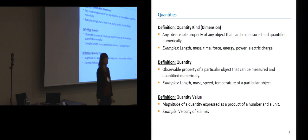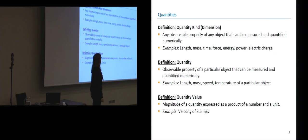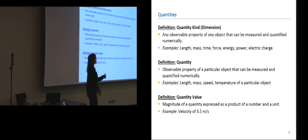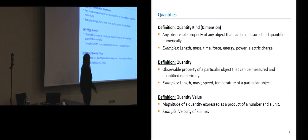Before we dive into the details, I'd like to start with a couple of definitions. The first important term is a quantity kind or a dimension, which is any observable property of any object that we can measure and quantify numerically — so a length, a mass, a time, a force, and so on. Then a quantity is an observable property of a particular object, and a quantity value is the magnitude of a quantity expressed as a product of a number and a unit — for instance, a velocity of 3.5 meters per second.